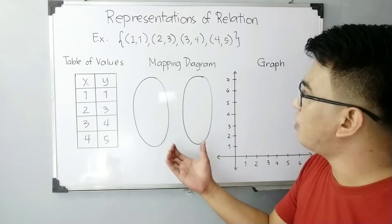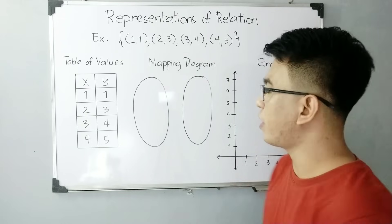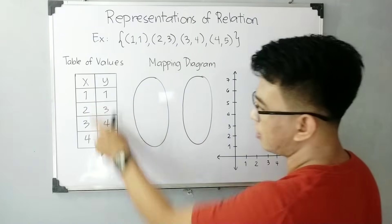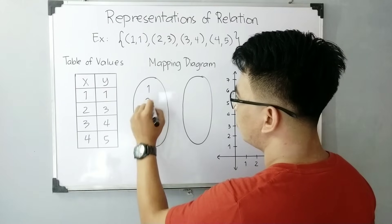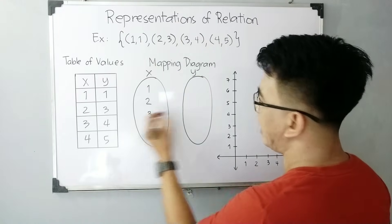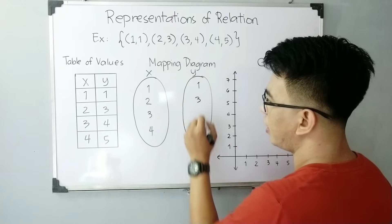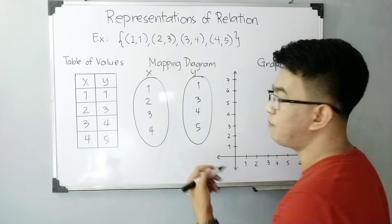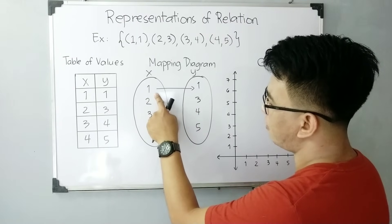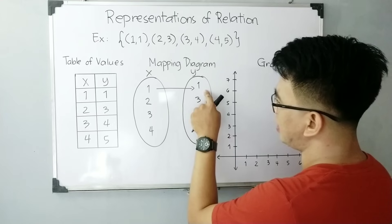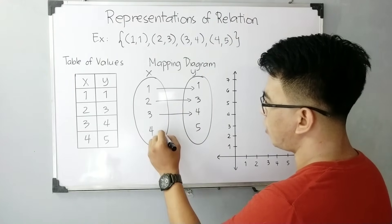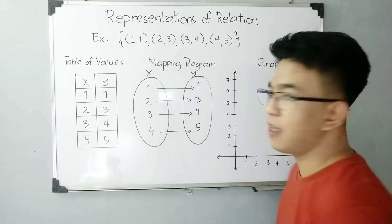The third type of representation is called a mapping diagram, wherein given two ovals, all you need to do is list down all values of x: 1, 2, 3, and 4. This is your x, and for the y variable you have 1, 3, 4, and 5. To complete the mapping diagram, you need to show the correspondence — from your input or x value going to y value. So 1 corresponds to 1, 3 corresponds to 4, and 4 corresponds to 5. This is what we call a mapping diagram.